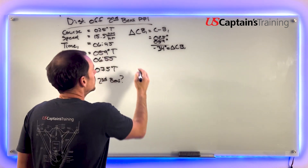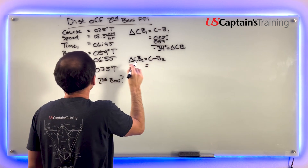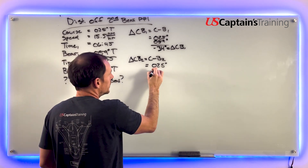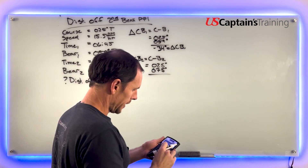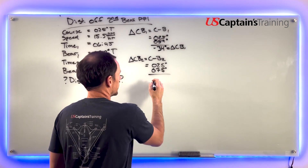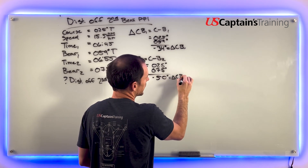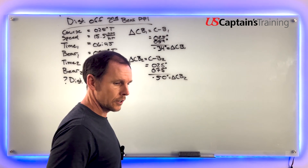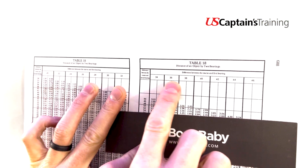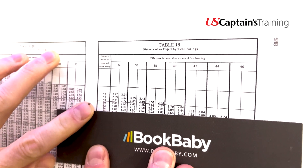Now we find the difference between our course and bearing two: course minus bearing two. Course is 025 degrees, bearing two is 075 degrees. On the calculator: 25 minus 75 equals negative 50 — don't worry about the negative. This gives us 50 degrees, the difference between the course and bearing two. We can now go to our table: the top row is for bearing one — we have 34. The side row is for bearing two — we come down to 50.